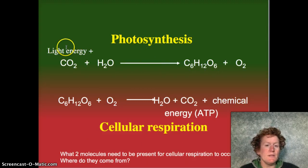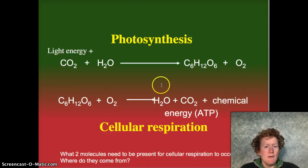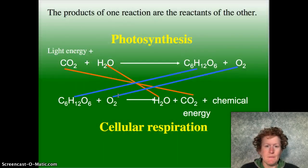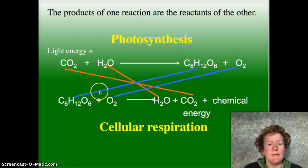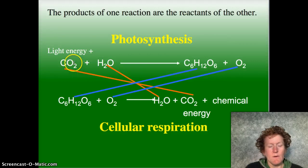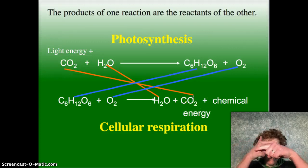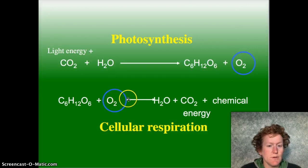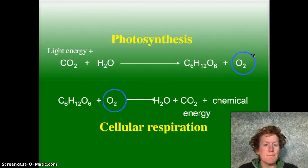In photosynthesis, we have to add light energy to make the reaction go. In cellular respiration, when we break down glucose, we get that energy back. So, the reactants of photosynthesis are the products of cellular respiration. The products of photosynthesis are the reactants of cellular respiration — the two equations are running in reverse. Notice oxygen: you need oxygen to get cellular respiration to work, and you produce oxygen as a product of photosynthesis.